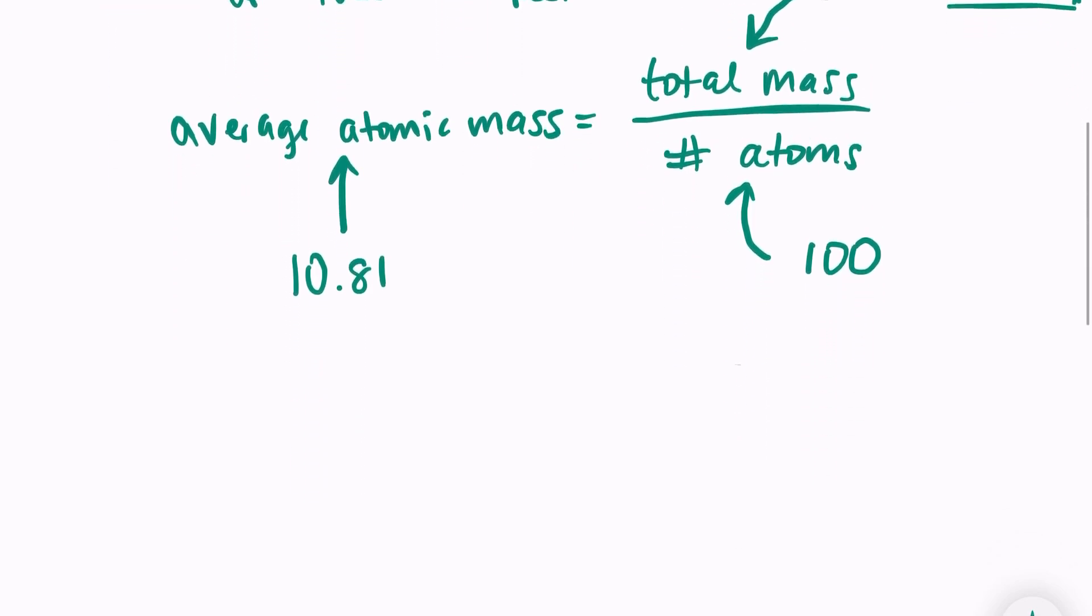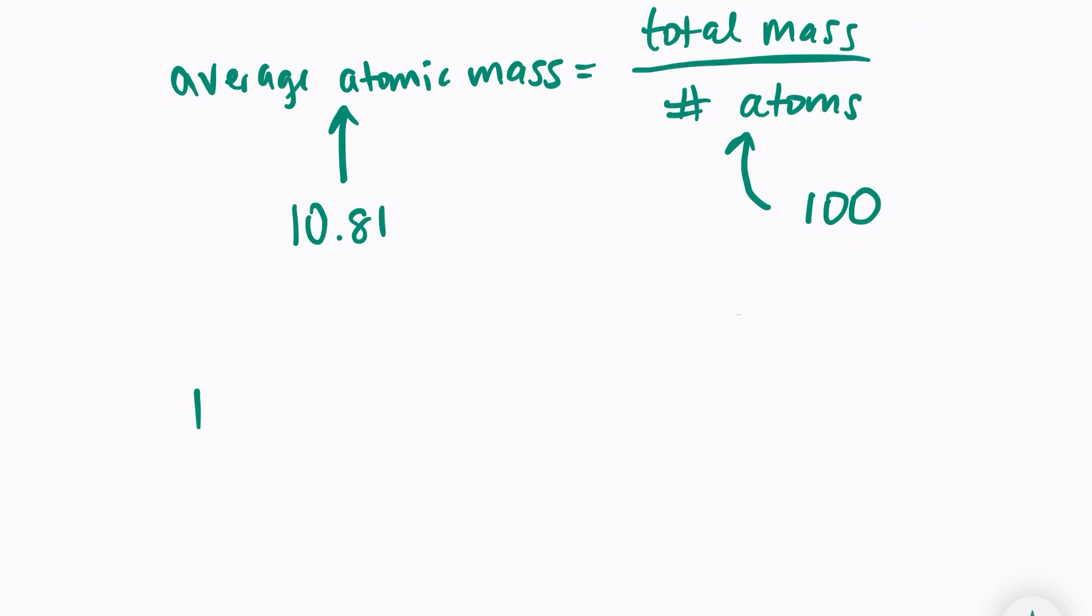Let's put all of this into the equation that we have. So 10.81 is equal to atomic mass times percentage over 100.